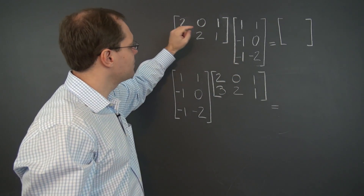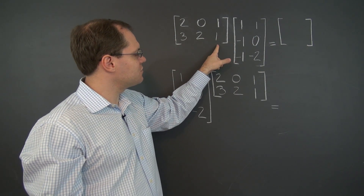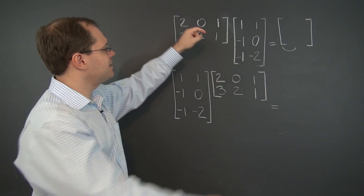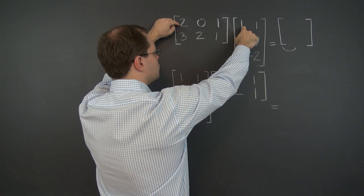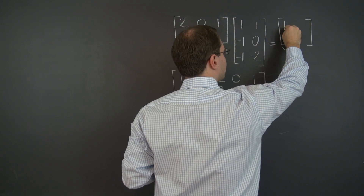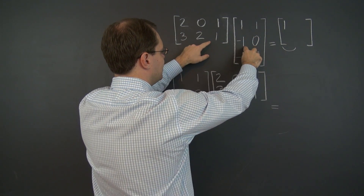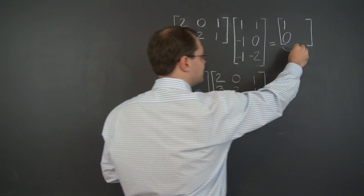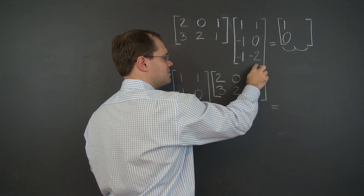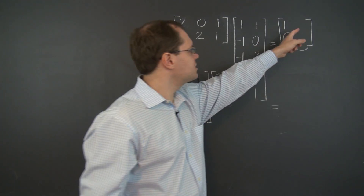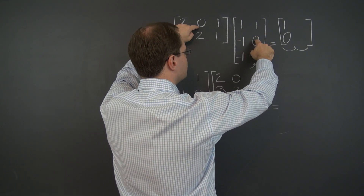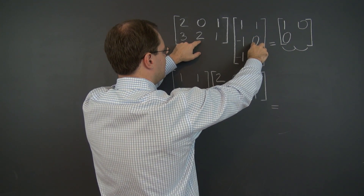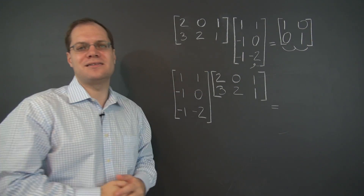Starting with the first column, we're doing the linear combination of these three columns with coefficients coming from the first column of the right matrix. Doing the running sum: the first entry is 2, 2, 1, and the second entry is 3, 1, 0. Moving on to the second column, it's a linear combination of the same columns but with coefficients from the second column. The first entry is 2, 2, 0, and the second entry is 3, 3, 1. And this completes this example.